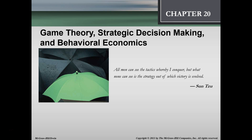In this lecture we're going to talk about Game Theory, Strategic Decision Making, and Behavioral Economics Chapter 20. We're going to start off with our quote from Sun Tzu, who is a Chinese general. He wrote The Art of War. His quote is: 'All men can see the tactics whereby I conquer, but what none can see is the strategy out of which victory is evolved.'